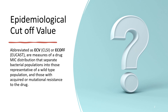Let us understand how epidemiological cutoff values are derived. The epidemiological cutoff — abbreviated as ECV or ECOFF — is a measure of the MIC distribution that separates bacterial populations into those representing wild type, that is with no resistance mechanism, and those with acquired or mutational resistance mechanisms, that is non-wild type.